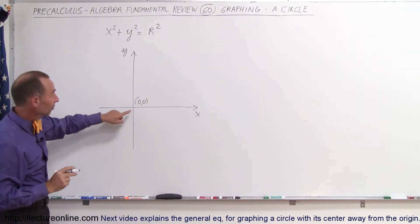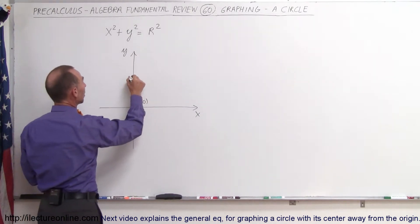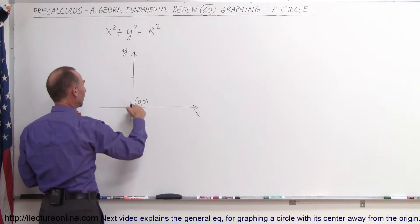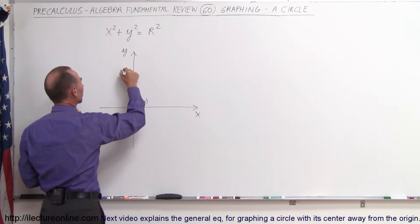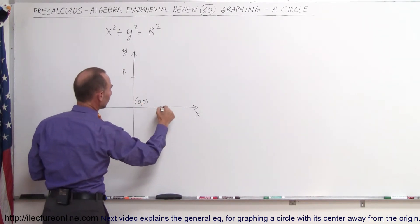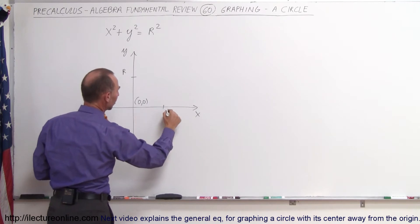Alright, if that's the center of the circle, then the radius would be r. So if we draw a distance out away from the origin, call that r in the y-direction, and we do the same in the x-direction, call that r,